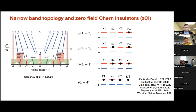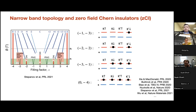Numerous numerical calculations have shown, including this work, that such Chern states are not energetically favorable compared to other states — in particular stripe states or intervalley coherent states. At low field, the competing state wins. It's only when the field increases that one can imagine Chern states becoming energetically favorable because they have a finite orbital magnetic moment that can be aligned with the magnetic field direction, making their energies more competitive compared to zero-field intervalley coherent or stripe states.